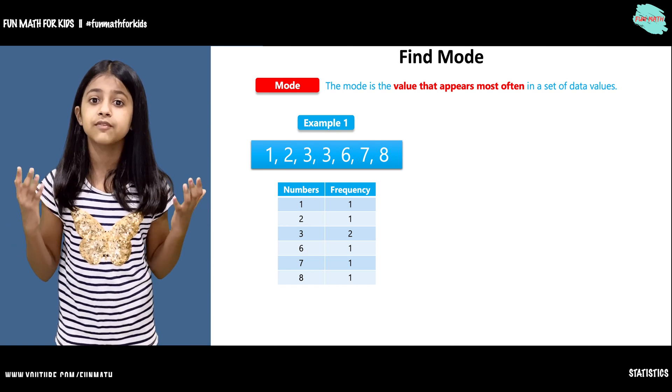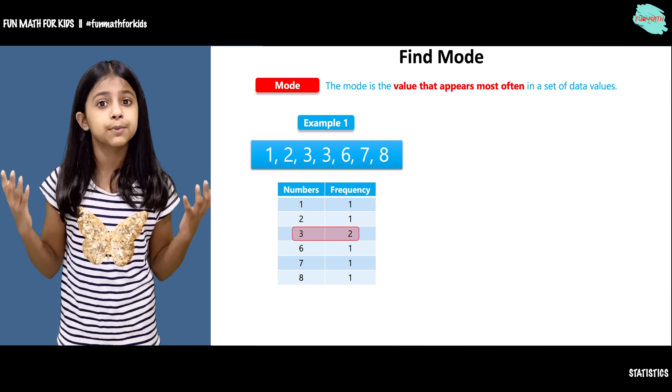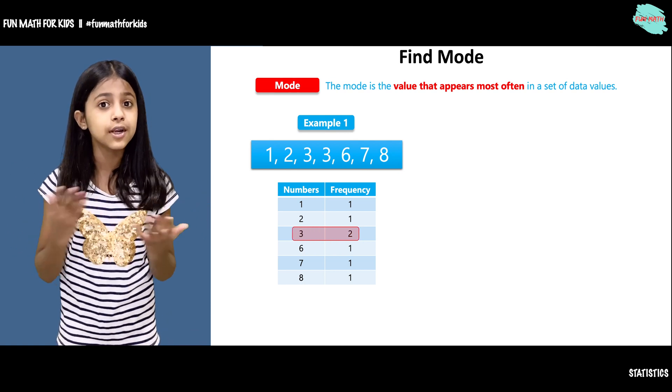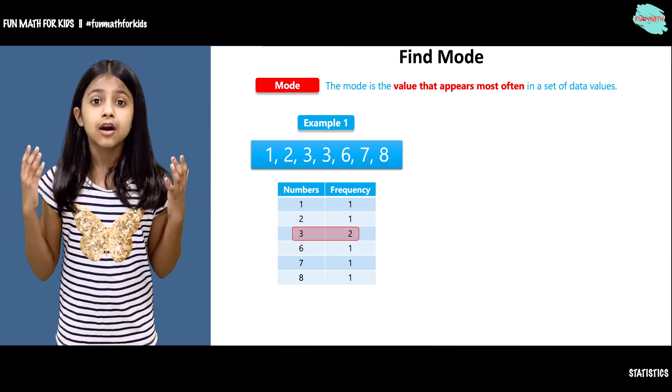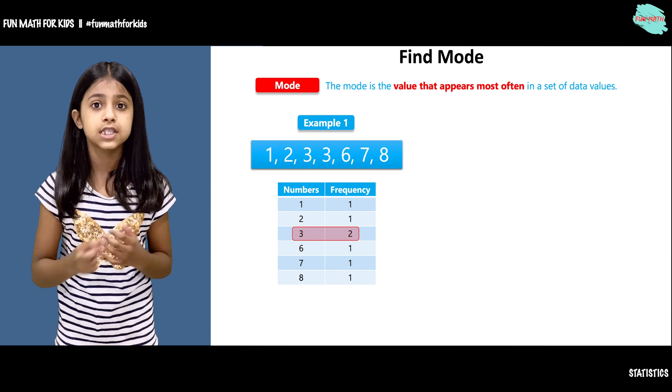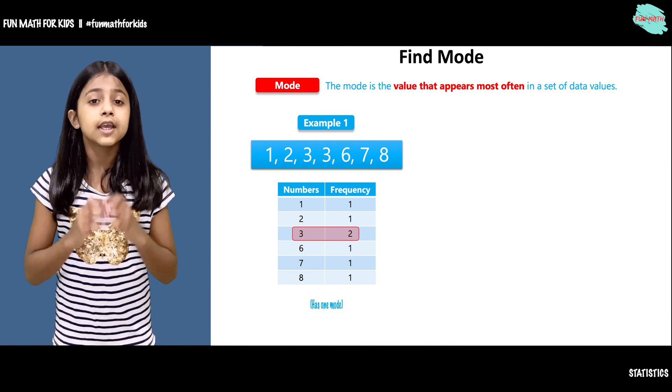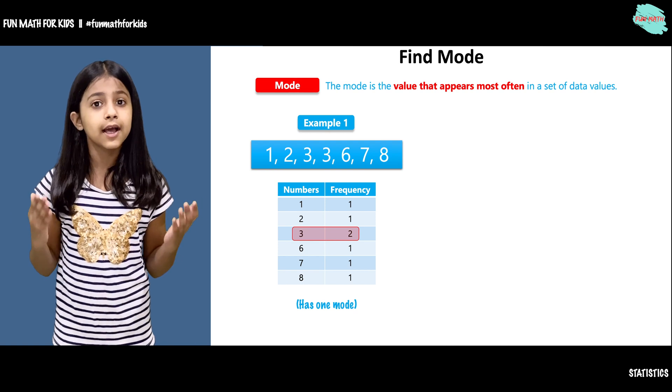The mode is the value that appears most often. So what is the value that appears most often? It is 3. But why 3? That is because all the other numbers have a frequency of 1 and 3 has a frequency of 2. In this data set, it has one mode, and that is 3.